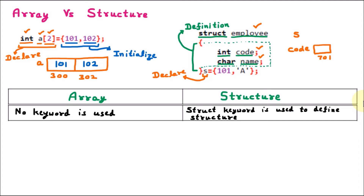The second element of the structure is 'name', so inside 's' one more block is reserved for name. Let's say the address is 801, and that is of character type. Both are part of 's' because 's' is the structure variable. Structure contains 'code' and 'name', so inside 's' we have code and name, and with 's' we can access both. This is called the declaration of structure variable.